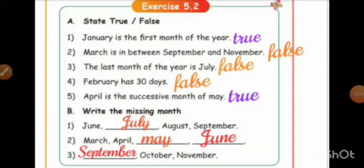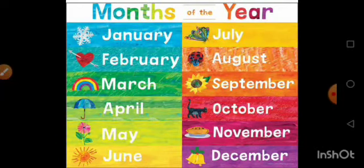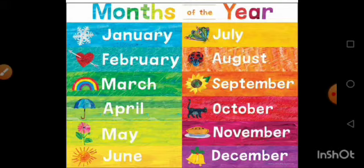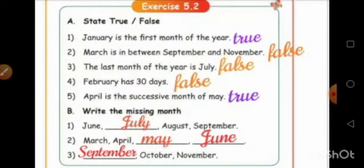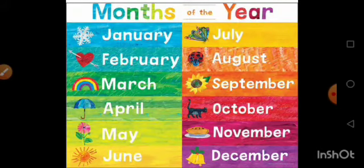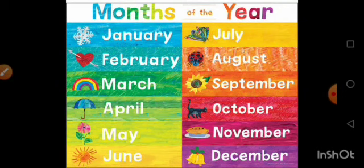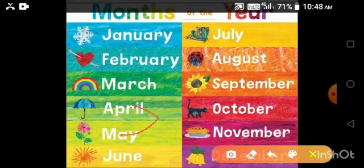Exercise 5.2: State true or false. First: January is the first month of the year — True. Second: March is in between September and November — the month between September and November is October, so False. Third: The last month of the year is July — December is the last month, so False. Fourth: February has 30 days — February has 28 or 29 days only, so False. Fifth: April is the successive month of May — True.